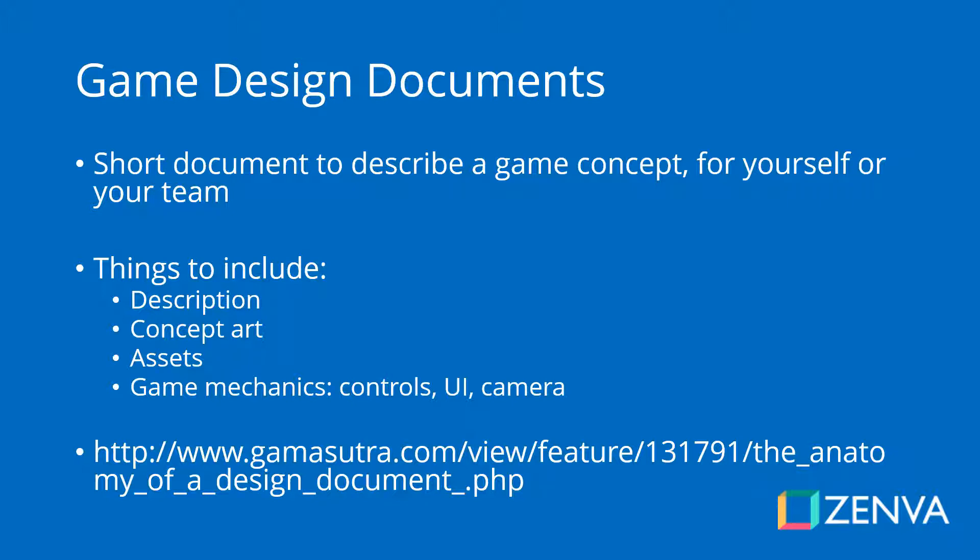Game design documents are used all over the game industry, from big studios to indie developers. They are a very short document that describes the main concept of your game. There's not a single template for this sort of document — it really depends on the scale of the project, whether it's just for yourself, or you're working with contractors, a team, or a large organization. Some things you should generally include are the concept of your game, what it's about, the main gameplay or game mechanic, and a description of some of the assets you'll need.